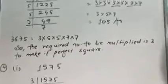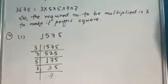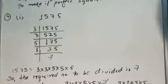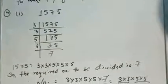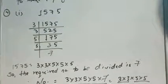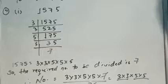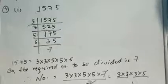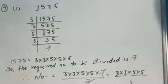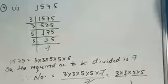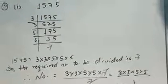Question number 4 बिल्कुल इसका opposite है। Question number 4 में कहा जा रहा है: by what least number should the given number be divided to get a perfect square number? In each case, find the number whose square is the new number। Question 3 में multiplication था, इसमें divide है।